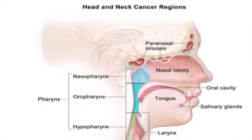This is what we are focusing on today. As you all have already seen, this is a part of the head and neck area: the paranasal sinuses, the nose and the nasal cavity, the mouth, the tongue, the back of the tongue, and then finally the throat area, which gets divided into the nasopharynx, the oropharynx, and the hypopharynx.